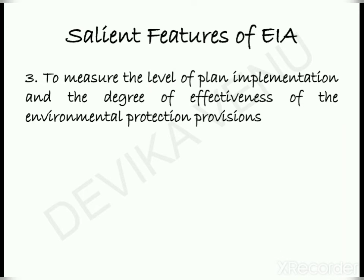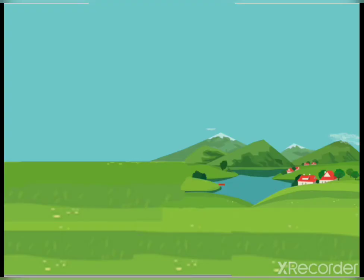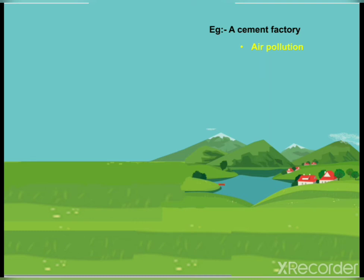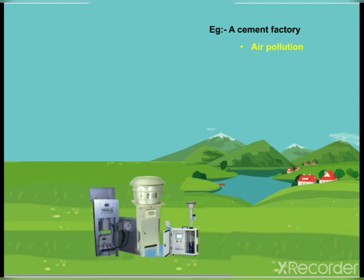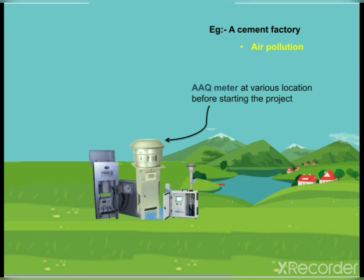Third salient feature: to measure the level of plan implementation and the degree of effectiveness of the environmental protection provisions. Consider a site where a proponent is proposing a cement factory. Since it is a cement factory, the major pollution to be considered is air pollution. For this example, I will take air pollution as the main term of reference.